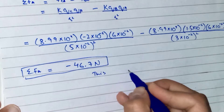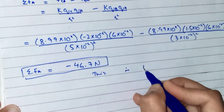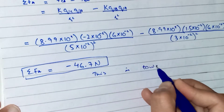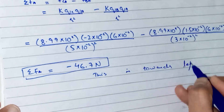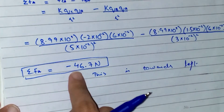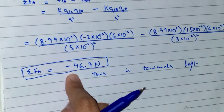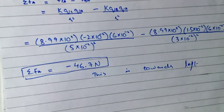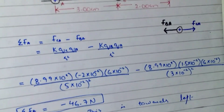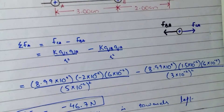The result of −46.7 Newtons means the net force on charge A is directed towards the left, due to the negative sign from the attractive force of the negative charge C.